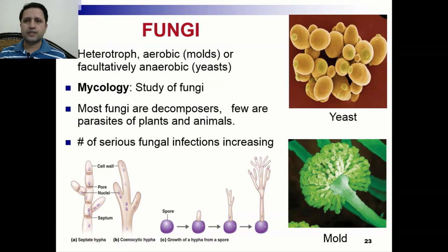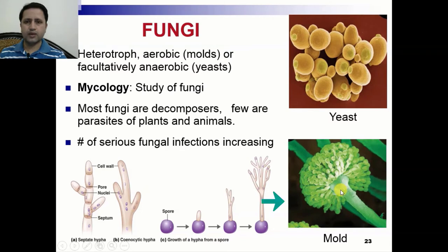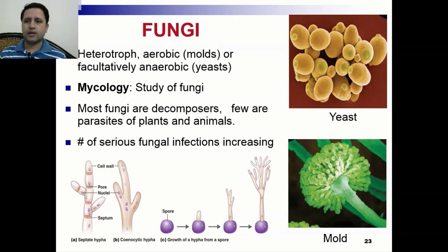Fungi are heterotrophs. They are aerobic — an example of aerobic is mold — and a facultative anaerobic example is yeast. Here you can see an example of yeast cells and an example of molds. Most fungi are decomposers, while few are parasites of plants and animals. Decomposers are those organisms that decompose different types of pollutants or substrates, and a number of serious fungal infections are increasing day by day.